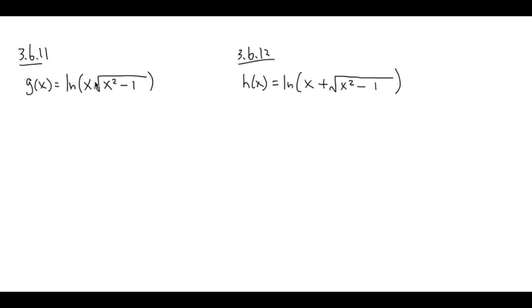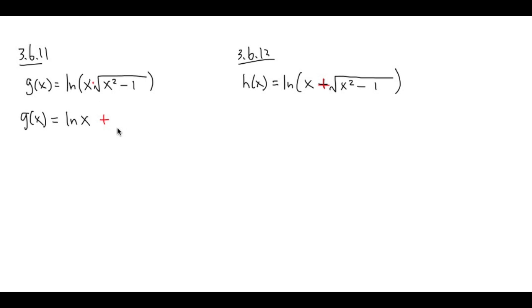For number 11, we have x times square root of x squared minus 1, and for number 12, it's adding. For number 11, we can do log properties first — this is how you do it. I'm not going to take the derivative yet, but if you simplify the logarithm first, it's going to be easier. ln of a product turns out to be ln of the first, and you can separate them by addition and ln of the second.